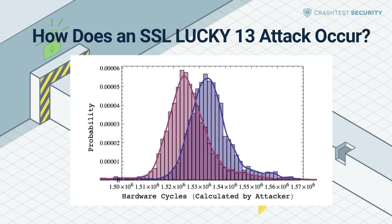Attacker-generated ciphertexts are sent to the same place in the plaintext stream during several TLS sessions to establish this difference, generating an error message in the network as a response. By repeatedly launching an attack and carefully analyzing the responses, these different padding conditions can be distinguished from each other. Then, using the packet's timing data, an attacker can execute a plaintext recovery attack on the MAC check while processing a malformed CBC padding.